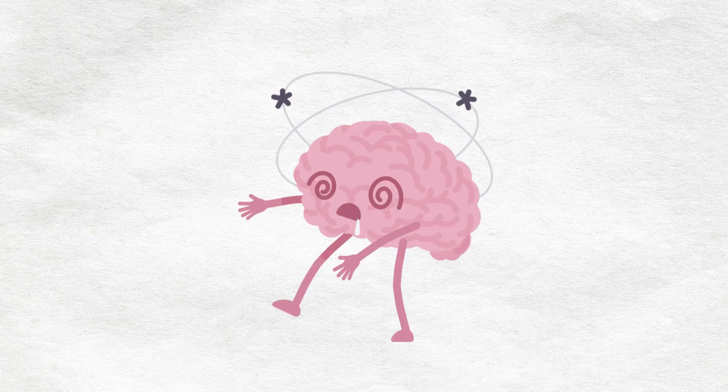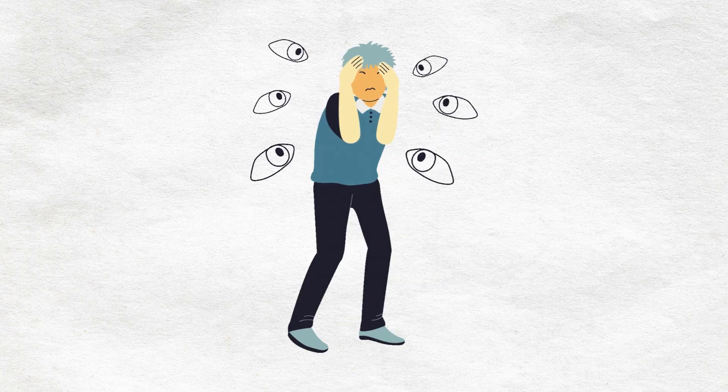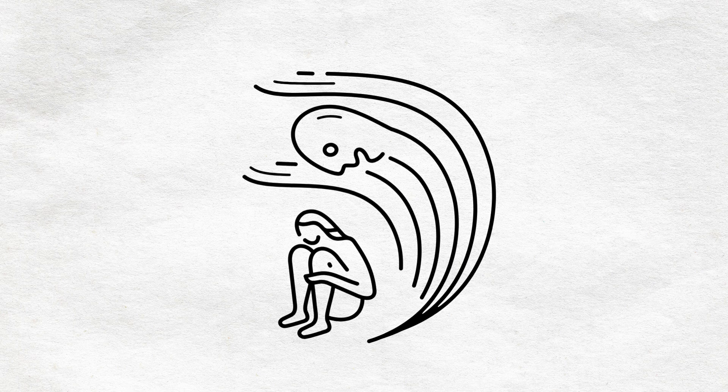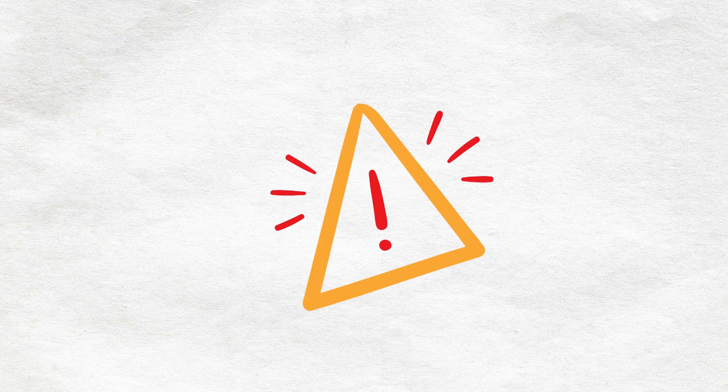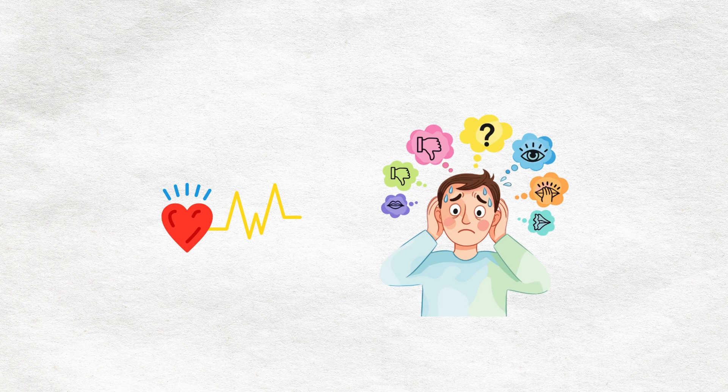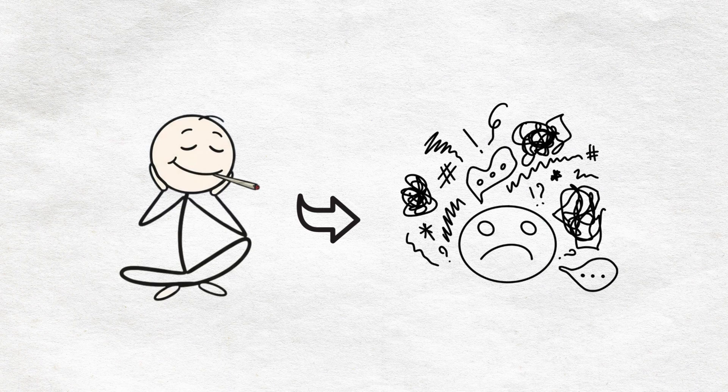Paranoia, when the high turns dark. On the other side of this experience is paranoia. That creeping, crawling feeling that something's wrong, that people are staring, that you're in danger, even though nothing's happened. Your heart races, your thoughts spiral into worst-case scenarios. The relaxation you felt minutes ago flips into pure anxiety.